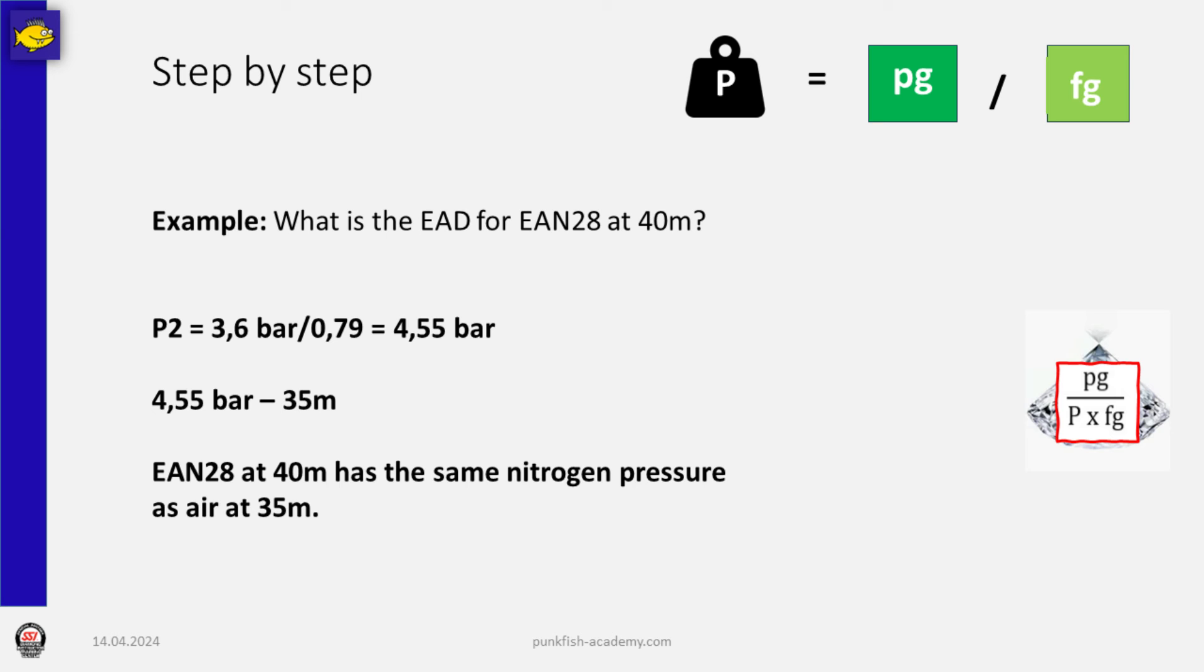So we have an equivalent air depth of 35 meters, means when we breathe a nitrox 28 at 40 meters, we saturate with nitrogen in the same way as we would saturate when we breathe air at 35 meters. That's the equivalent air depth.